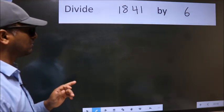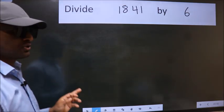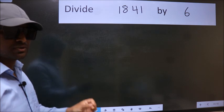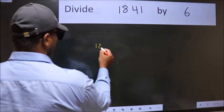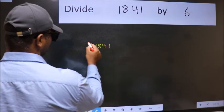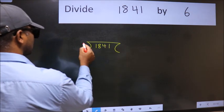Divide 1841 by 6. To do this division we should frame it in this way. 1841 here, 6 here.